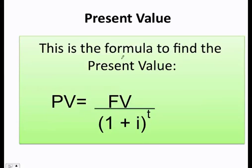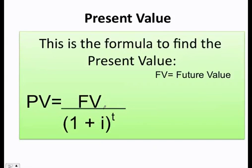First of all, let's learn the formula to find the present value. Here we see that FV means future value, I is the interest rate, and T is the time. Let's go ahead and do some examples.